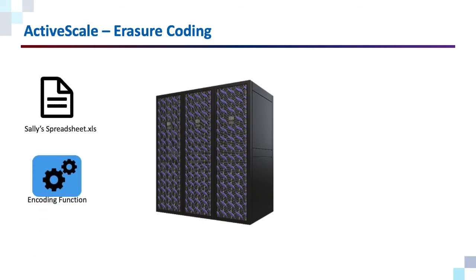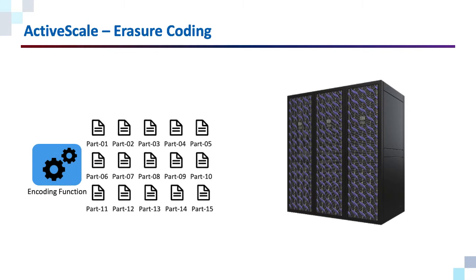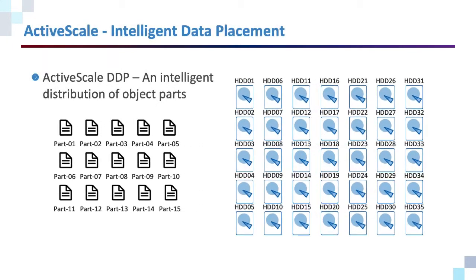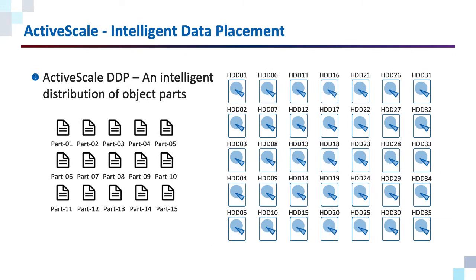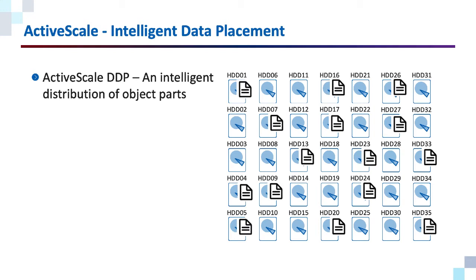When a file comes into an ActiveScale system, it is not simply placed as an object. It goes through an encoding process, and the result of that encoding process is an erasure encoded object, in this case with 15 parts. This is where DDP comes in. We want to minimize the impact of hardware failures and avoid creating IO hotspots, so we need to be intelligent when determining exactly where to place these object parts.